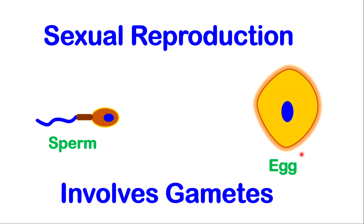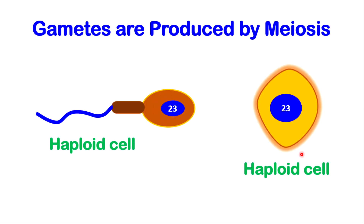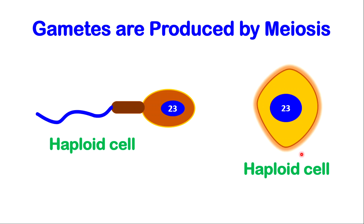Sexual reproduction involves gametes or sex cells, particularly egg and sperm cells. Gametes are produced by meiosis. Meiosis results in haploid cells, which means the cells will have half the number of chromosomes as the parent cell. Taking for example human beings with somatic cells of 46 chromosomes, when they produce gametes, the cells will have only 23 chromosomes.